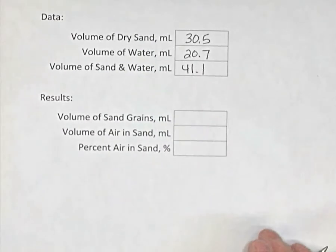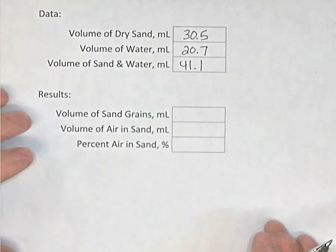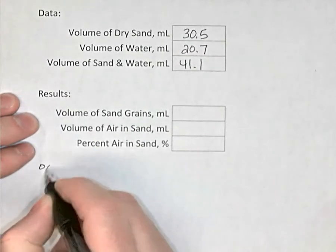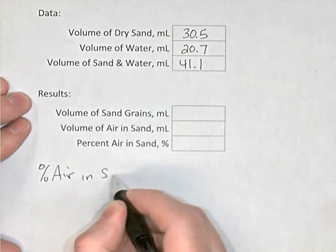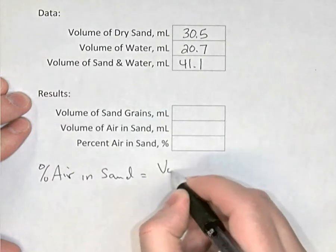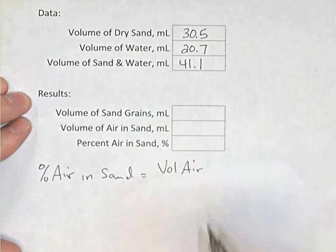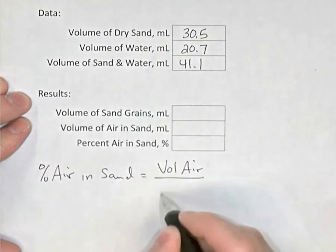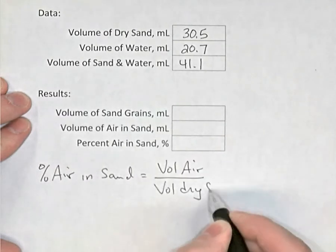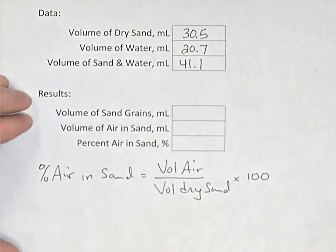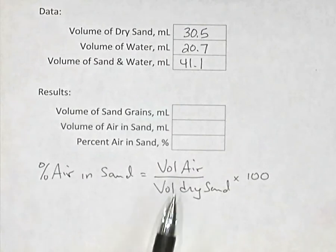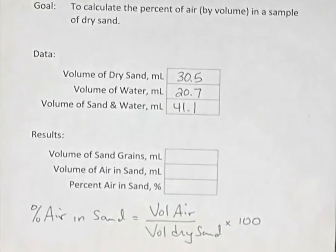Now with that information, we have enough data to calculate the percent air in sand. So the percent air in the sand will equal the volume of air that's in the sand divided by the volume of the dry sand. And we'll multiply that by 100. So there's a simple idea of air divided by volume of dry sand times 100 gives us the percentage of air in the sand. So looking at our data up above,